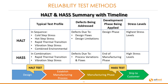Let's have a look at the HALT and HASS summary with a timeline. In the table across the top, we have the typical test profile for both HALT and HASS, the defects being addressed, the development phase being applied, and the stress levels. From a timing point of view across the bottom, the HALT test is clearly shown in the design phase, whereas the HASS test is highlighted at the end of the manufacturing phase.